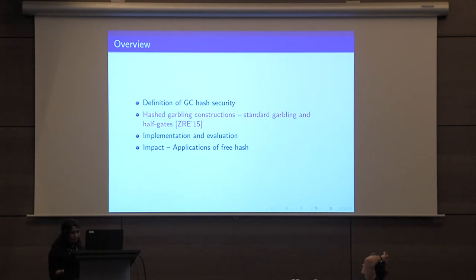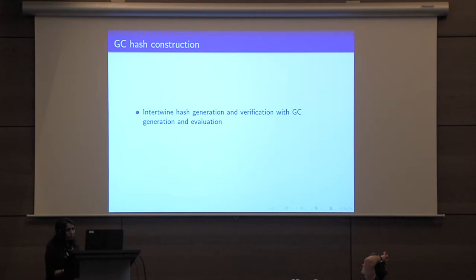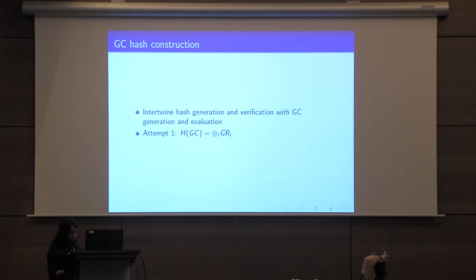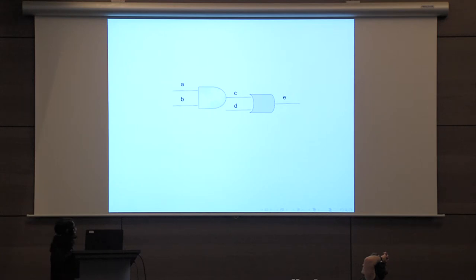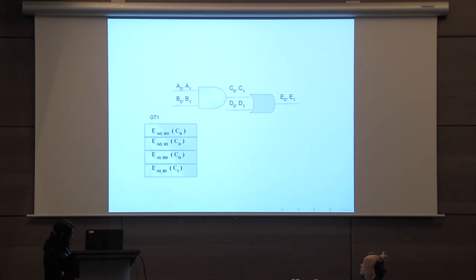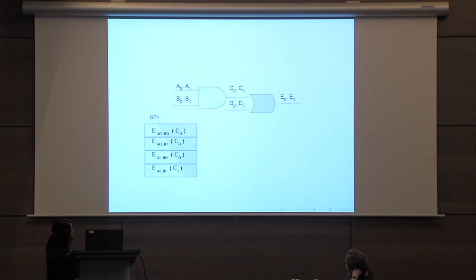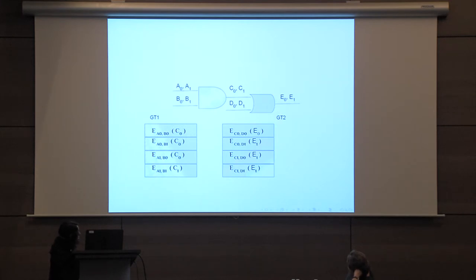Our high-level idea is to intertwine the generation and verification of the hash with the garbled circuit generation and evaluation. We attempt this by maintaining a running hash as the XOR of all the garbled rows. In an example circuit with two gates, we have garbled table GT1 for the AND gate encrypting output wire labels C0 and C1, and GT2 for the OR gate. If we set the hash to be the XOR of all garbled rows, an adversary can mount an attack by changing one entry in GT1 — say the last row to encrypt C0 instead of C1 — which shifts the hash by some offset delta. If the adversary knows an inactive row elsewhere in the circuit, he can change that entry by the same delta to fix the hash, and since that row is never used during evaluation, he will not be caught.